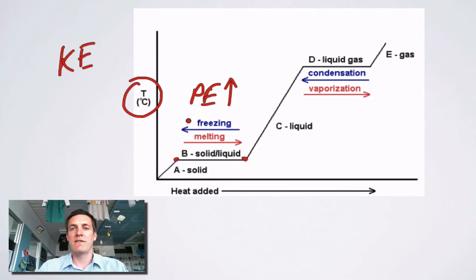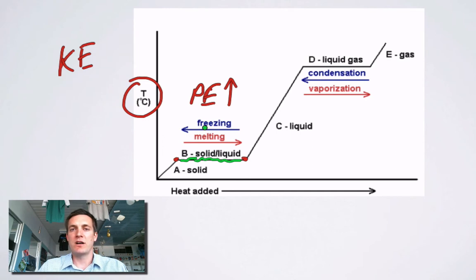The potential energy is rising because the particles are getting further apart from one another. This area B of the graph is where we're turning from solid to liquid — in other words, we're melting. The potential energy is rising because the particles are moving further apart; they have the potential to stick back together and do work. They're not starting to move faster. The kinetic energy stays the same, but the potential energy is rising because their positions relative to one another are changing and the forces that exist between the particles come into play.